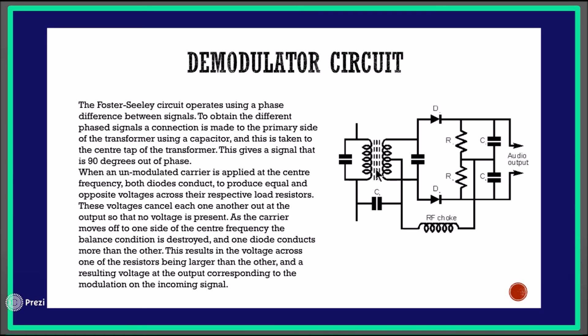When an unmodulated carrier is applied at the center frequency, both diodes conduct to produce equal and opposite voltages across the respective load resistors. These voltages cancel each other out at the output so that no voltage is present. As the carrier moves off to one side of the center frequency, the balance condition is destroyed and one diode conducts more than the other, resulting in a voltage at the output corresponding to the modulation on the incoming signal.